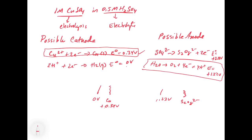The only anode reaction that can occur is the oxidation of water at +1.23 volts. So the E_cell equals our cathode (0.34 volts) minus our anode (1.23 volts), which gives a cell potential of −0.89 volts. We have to apply that potential to get the reaction to occur.